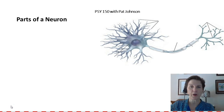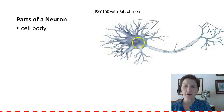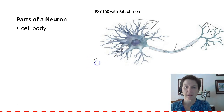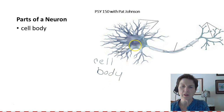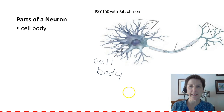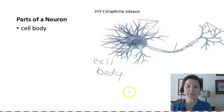The first part of a neuron that I want to discuss is the cell body. Here on our neuron right here is the cell body. The cell body contains all those parts of a cell body that you would see in any cell — the nucleus, DNA, RNA, mitochondria, all those different parts. And the cell body runs the cell; it makes the cell go.